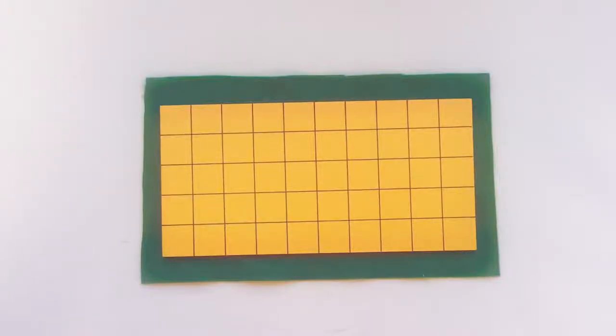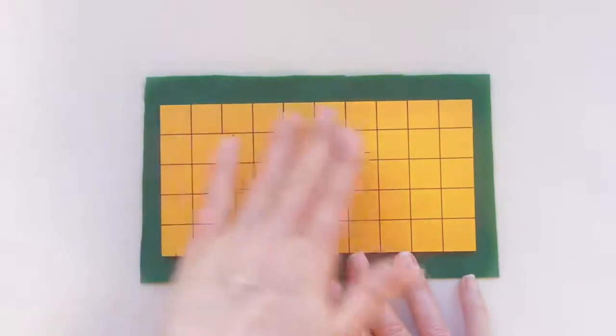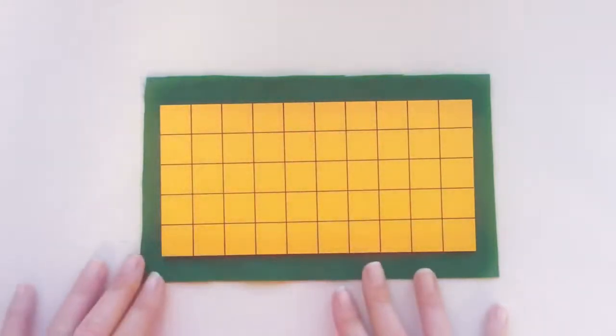This is the third lesson on area and we are going to find the area of a rectangle. Here we have our rectangle and in a previous lesson we learned that we could find the area by counting the squares. Pause the video and count up the squares. You should have counted 50 squares.